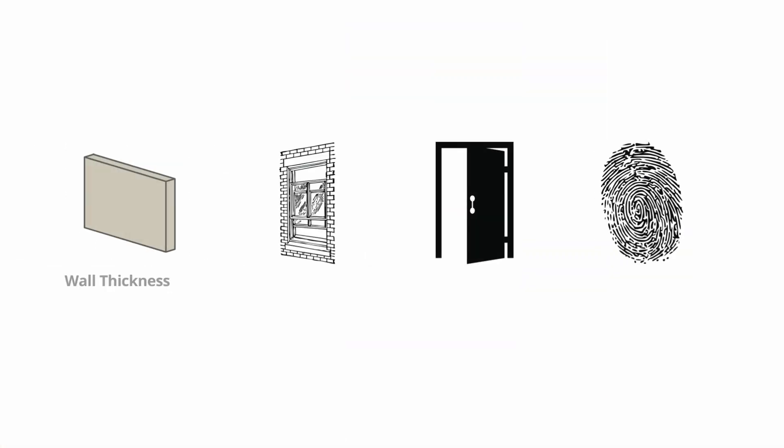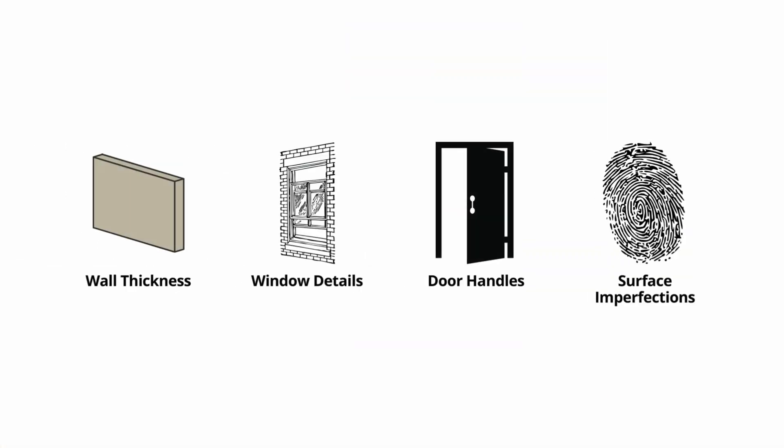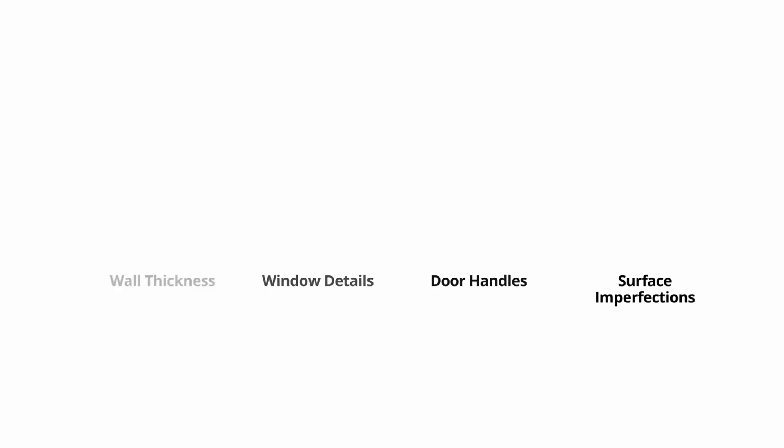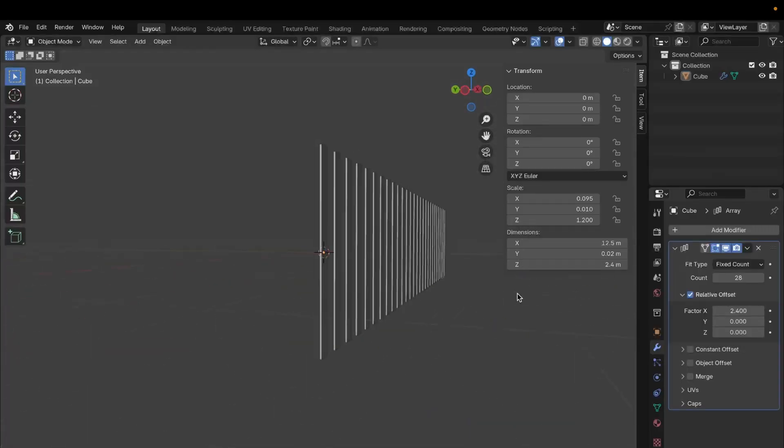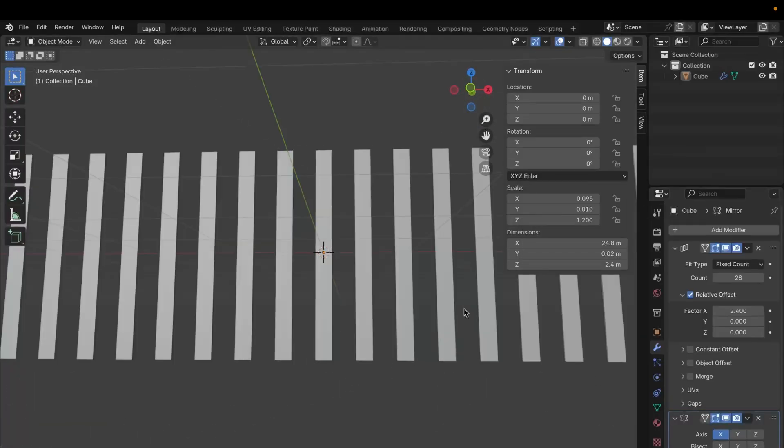Pay close attention to elements like wall thickness, window details, door handles, and even subtle surface imperfections. These small details can contribute significantly to the look of your overall render and can make the difference between a good and a great visualization. To streamline your modeling workflow, consider using modifiers such as array and mirror to model repetitive elements efficiently.